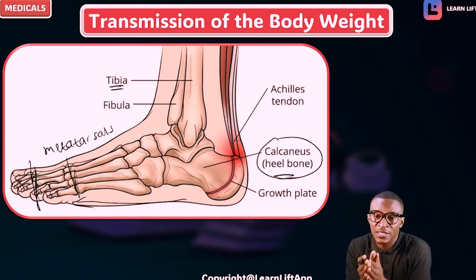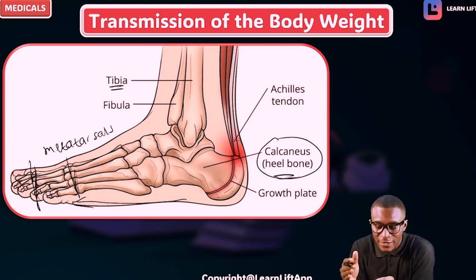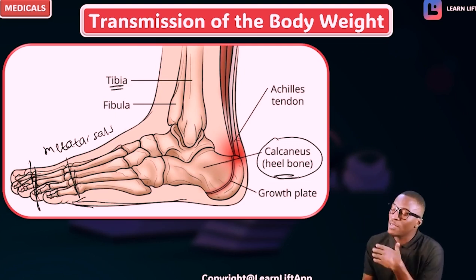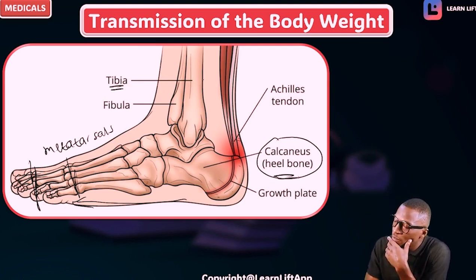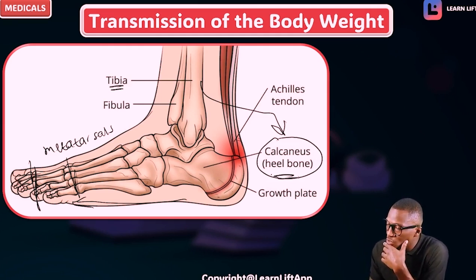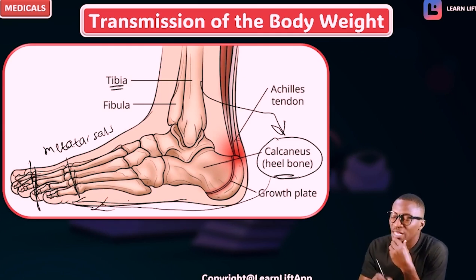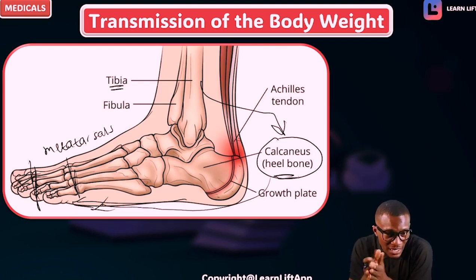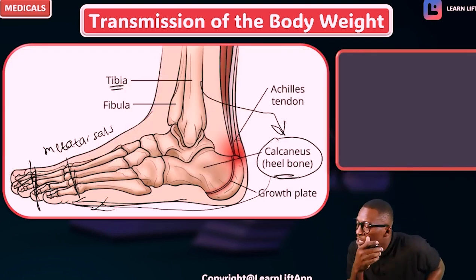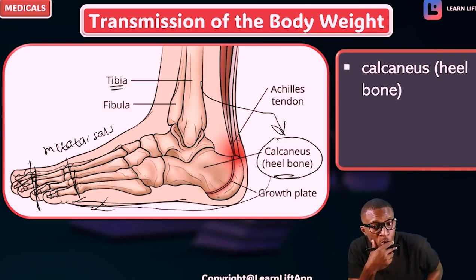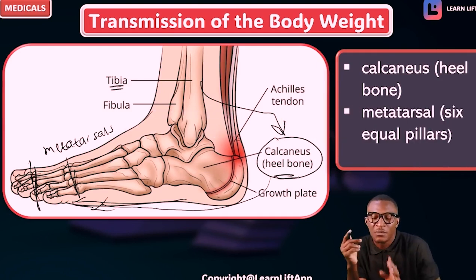The weight moves from the distal femur to the knee joint, from the knee joint to the tibia, from the tibia to the calcaneus (also called the heel bone), and from the calcaneus the weight spreads towards the head of the metatarsals. So the full lower pathway is: tibia → calcaneus → head of metatarsals.